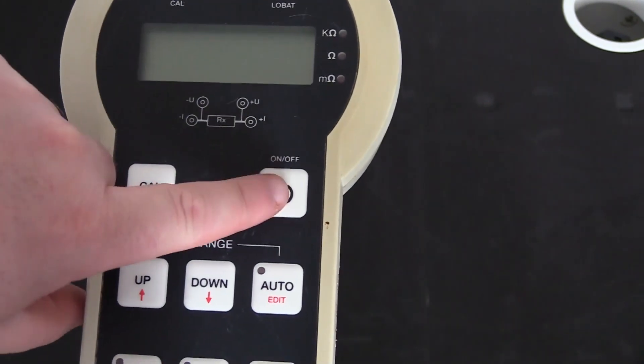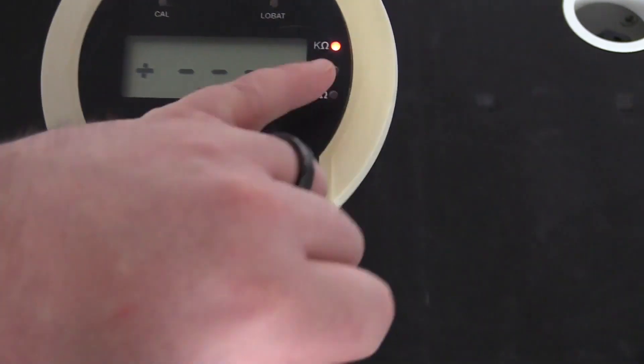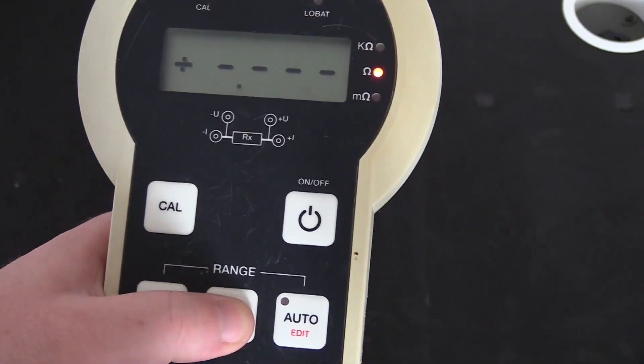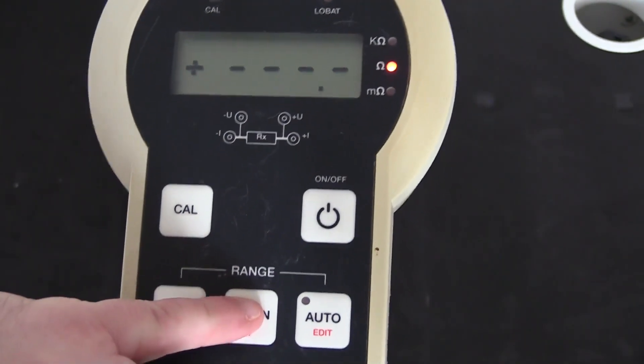We can change the range, so if I just quickly switch the unit on, you'll see we're on the kilo ohm range. I can simply move down the ranges by pressing the up and down range buttons.